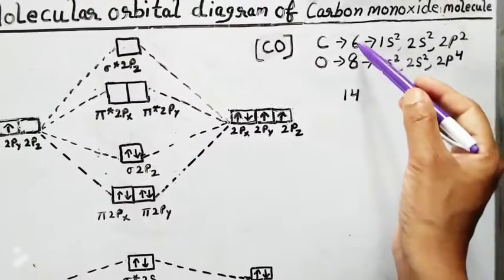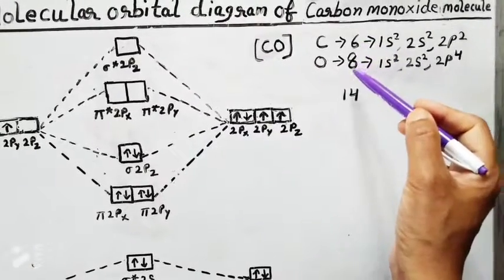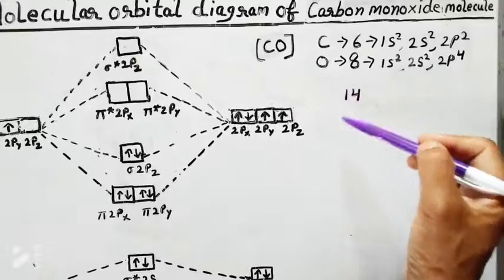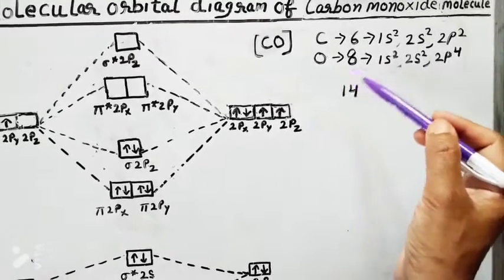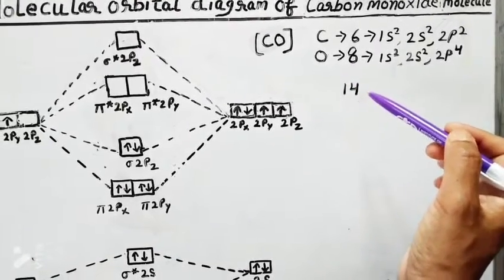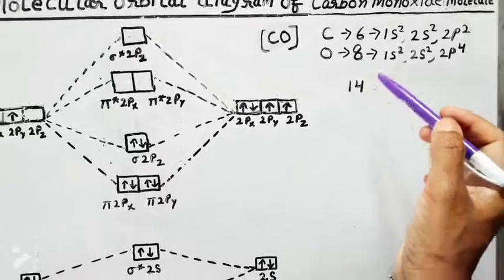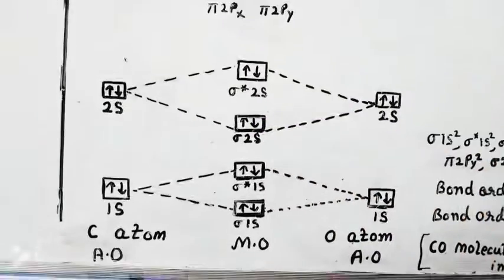The total number of electrons is 6 plus 8, which equals 14. So we have to fill 14 electrons in the molecular orbitals. Now we will see the molecular orbital diagram.